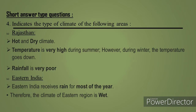The fourth short answer question: indicate the type of climate of the following areas — Rajasthan and Eastern India. Rajasthan is a desert, so its climate is hot and dry. The temperature is very high during summer. However, during winter the temperature goes down. This is a very strange climate — deserts are very hot in daytime but very cold at night.